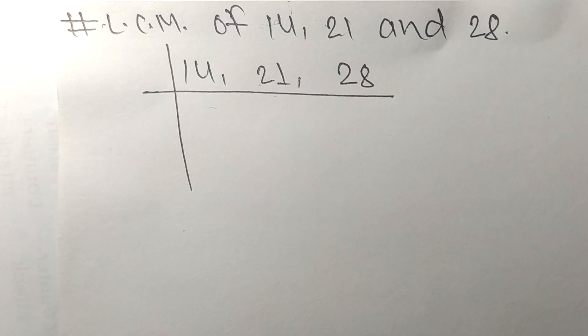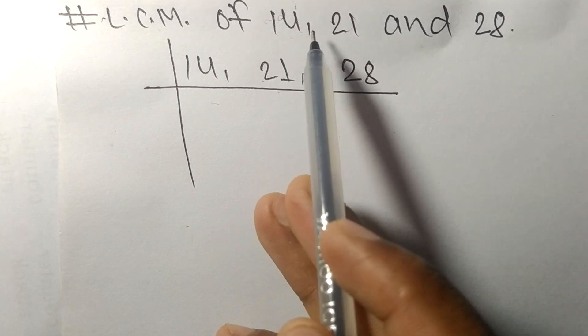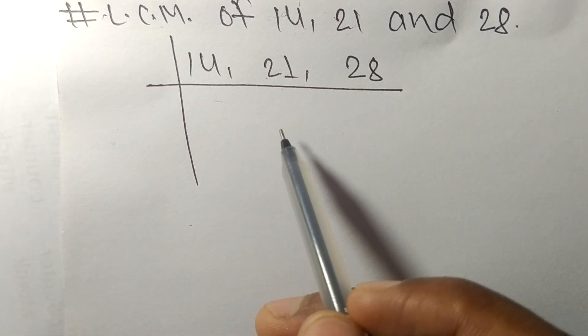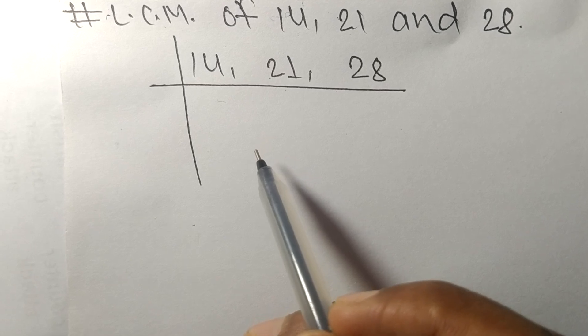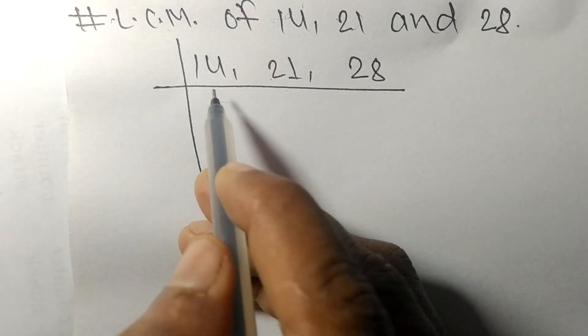So today in this video we shall learn to find the LCM of 14, 21, and 28. To find the LCM, we have to choose the number that can exactly divide at least any two of these numbers. So 14 and 28 are exactly divisible by 2.